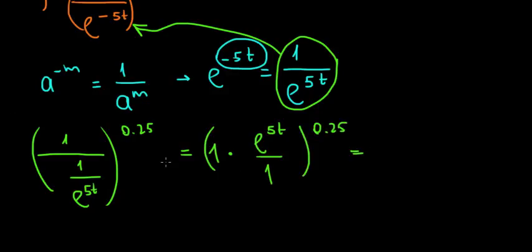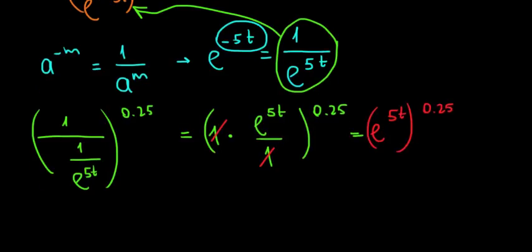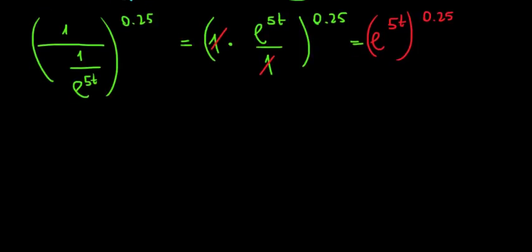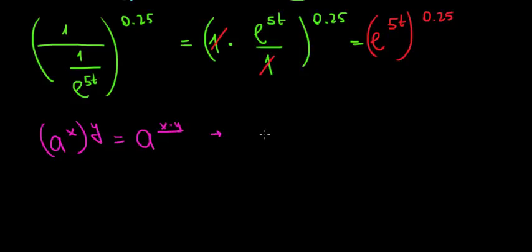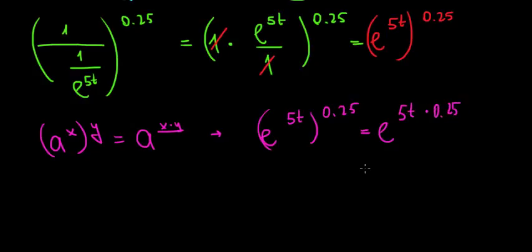The 1s cancel, leaving e to the power of 5t to the power of 0.25. We apply the power of a power rule: a to the power of x, to the power of y, equals a to the power of x times y. So we multiply the powers: e to the power of 5t times 0.25, which equals e to the power of 1.25t.